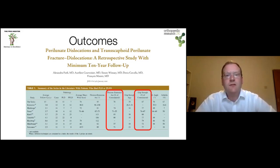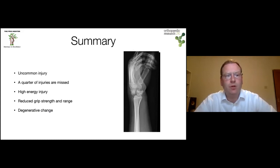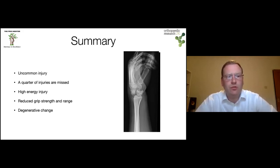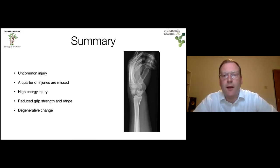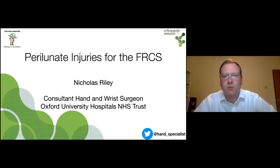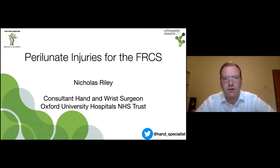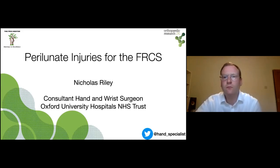In summary: perilunate injuries are uncommon, but a quarter of them are missed. They are a high energy injury. They tend to cause reduced grip strength and range of motion and commonly cause post-injury degenerative change. Thank you very much for listening — I'm happy to take questions or move on to cases.